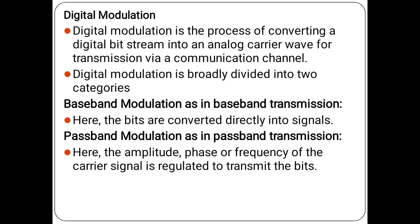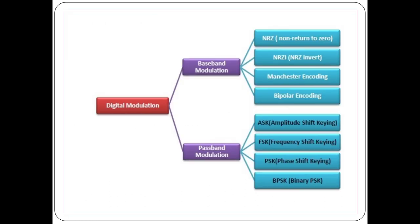Digital Modulation is the process of converting a digital bit stream into an analog carrier wave for transmission via a communication channel. Digital Modulation is broadly divided into two categories: Baseband Modulation, where bits are directly converted into a signal, and Passband Modulation, where the amplitude, phase or frequency of the carrier signal is modulated to transmit the bit.